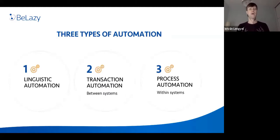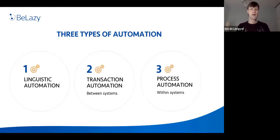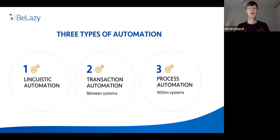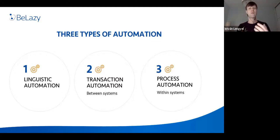There are three types of automation. The first is linguistic: machine translation, extraction of non-translatables, AI-type features that Memsource does well. The second is process automation — tools like XTRF or Plunet handle creating Memsource projects and assigning translators. The third is transaction automation, which is B-Lazy's domain: trading information between one system and another, always about integrations between two different types of systems.